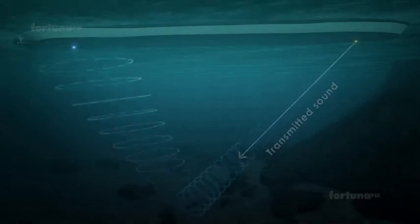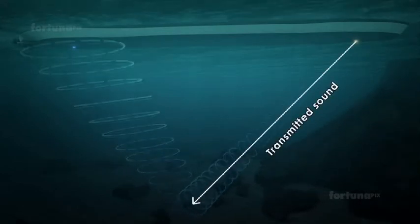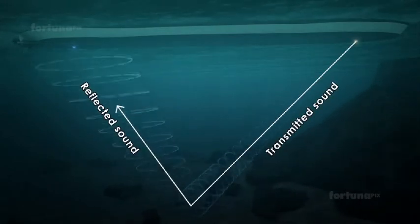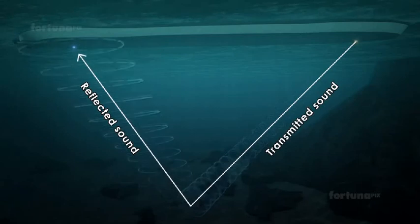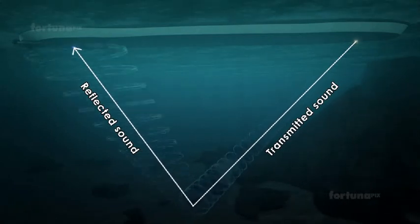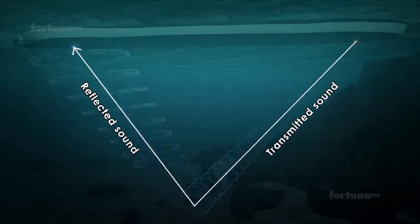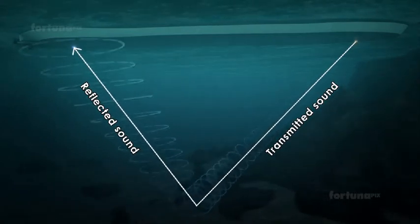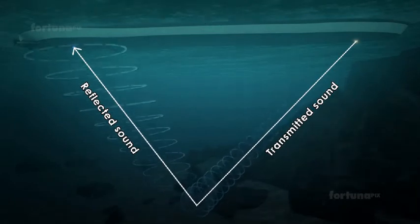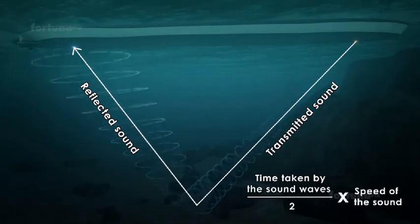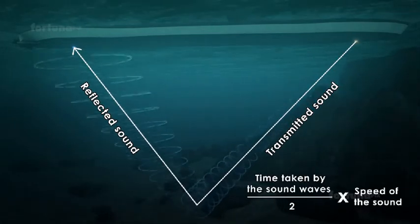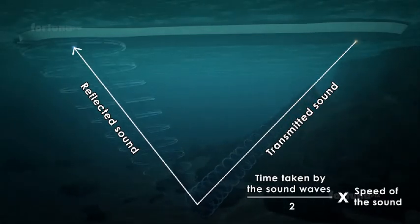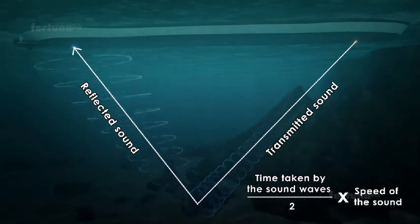When sound travels through water and strikes a submerged object, it reflects back. The distance of a submerged object can be calculated by dividing the time taken by the sound waves by 2, multiplied by the speed of sound.